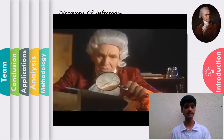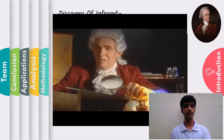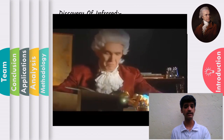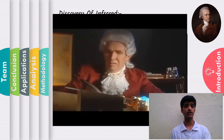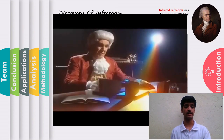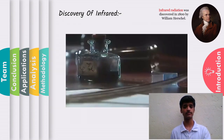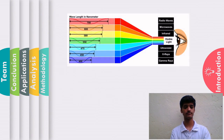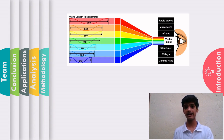This experiment was important because it marked the first time someone demonstrated types of light that we cannot see with our eyes. What Herschel had discovered was a form of light beyond red light, and now it is known as infrared light.